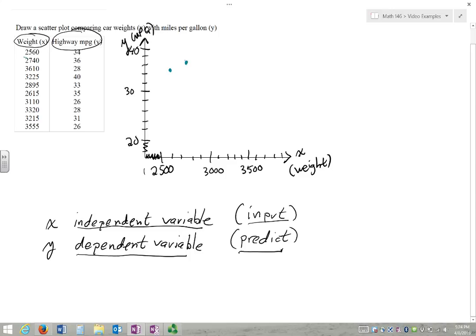3610. So there's 3600, 3610. It's just a little above that. Kind of eyeball it here. 28. 3225. So there's 31, 32. This will be a little bit approximate there.